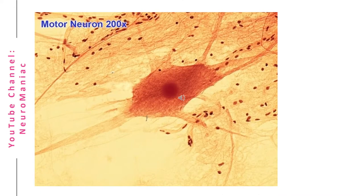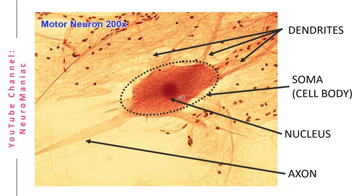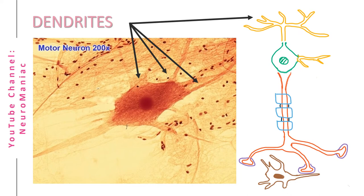Nearly all neurons consist of a dendrite, the soma, and an axon. The myelin sheath and node of Ranvier are also structural features that we'll dive into a bit later. From my last video you would have learned that...